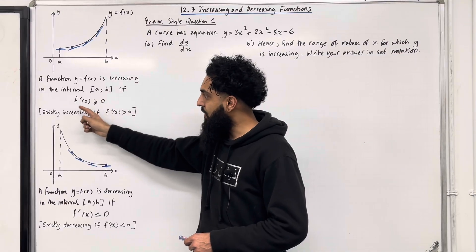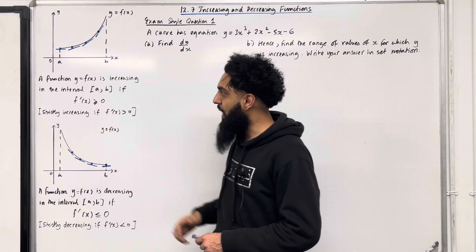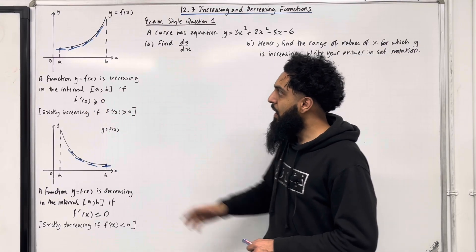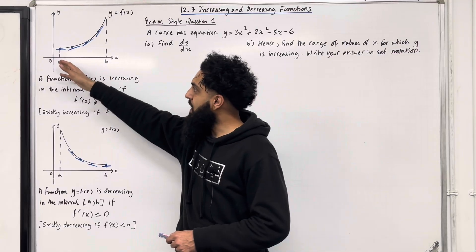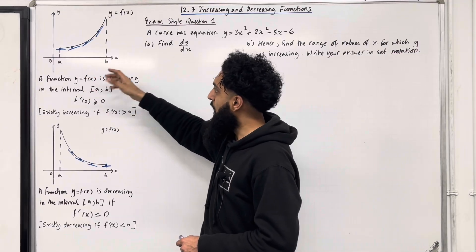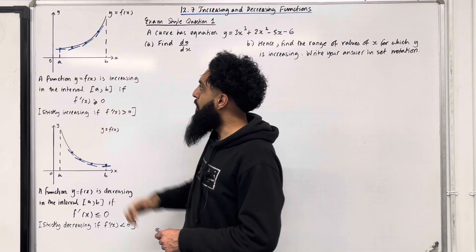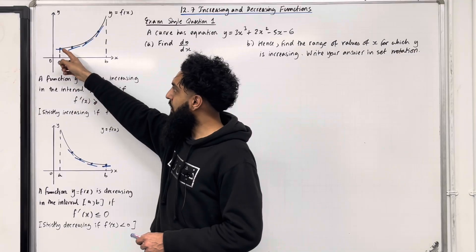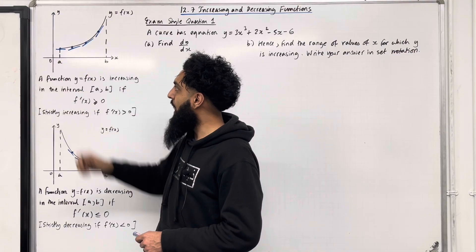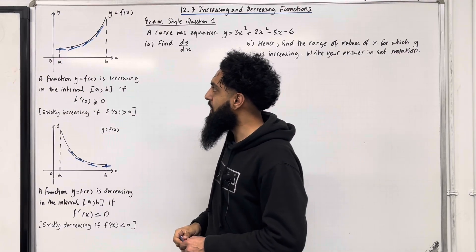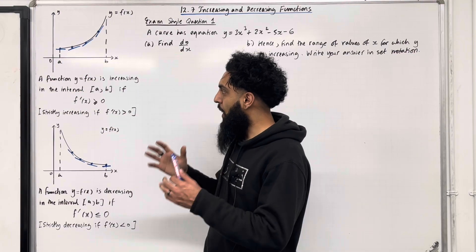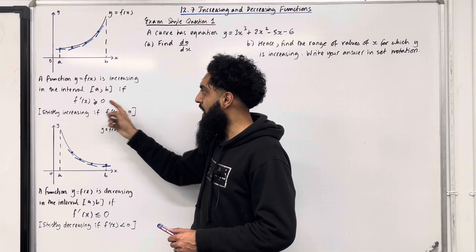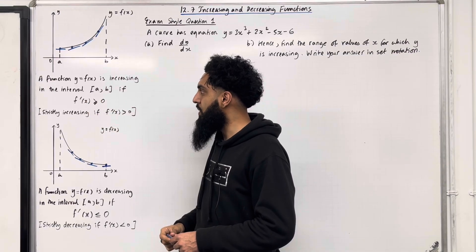f'(x) represents the gradient of the tangent to the curve at the point x. Have a look at the interval a to b. These three tangents here have a positive gradient. This tangent to the curve at the point x = a has a gradient of 0. So overall, in a nutshell, we have that f'(x) is greater than or equal to 0.